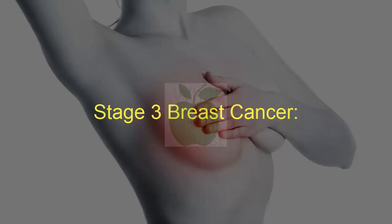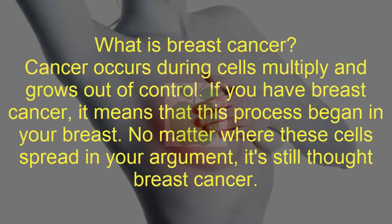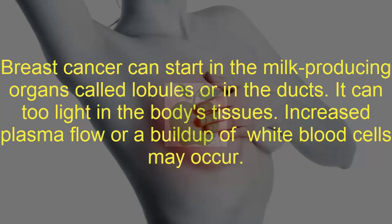Cancer occurs when cells multiply and grow out of control. If you have breast cancer, it means that this process began in your breast. No matter where these cells spread in your body, it's still called breast cancer. Breast cancer can start in the milk-producing organs called lobules or in the ducts. It can also involve the body's tissues.